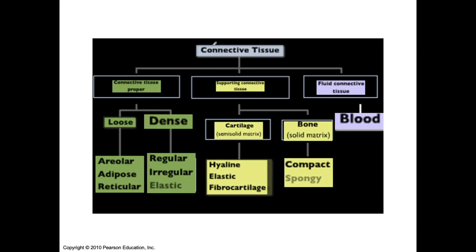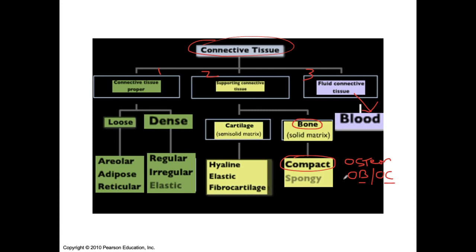When we talk about connective tissue, we have three main categories: connective tissue proper, supporting connective tissue, and fluid. Under fluid, we focused on blood — red blood cells, white blood cells, and platelets. Under supporting connective tissue, we spoke about bone, focusing on compact bone. We mentioned the osteon, and with that the osteoblast and osteoclast — the osteoblast builds up bone, the osteoclast breaks it down. We also covered the different parts of the osteon: the concentric lamellae, lacunae, and canaliculi.